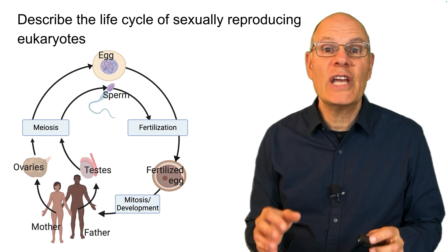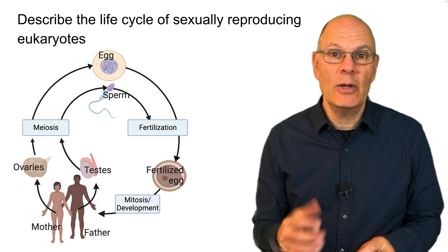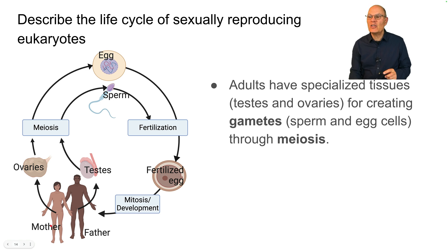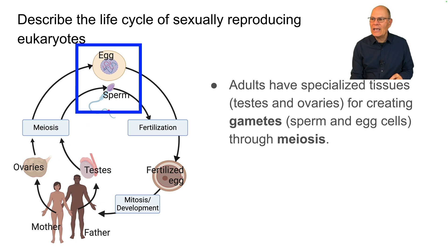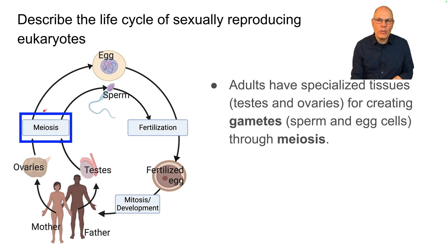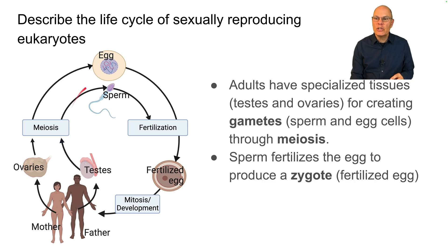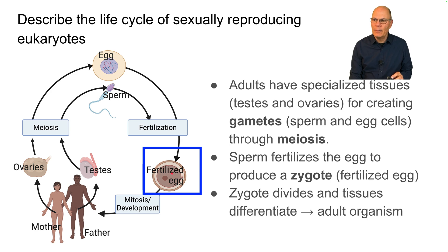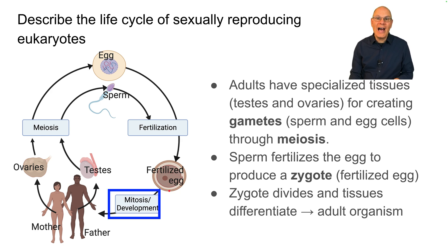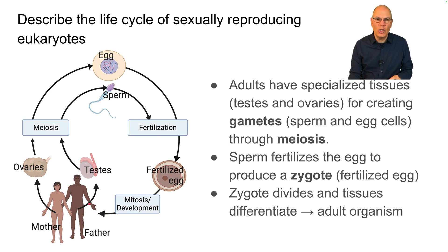Describe the life cycle of sexually reproducing eukaryotes. In eukaryotes, adults have specialized tissues — testes and ovaries — for creating gametes. Gametes are sperm and egg cells, and they are produced through meiosis. The sperm fertilizes the egg and produces a zygote, or fertilized egg. That zygote then divides and develops, and the tissues differentiate to produce an adult organism.